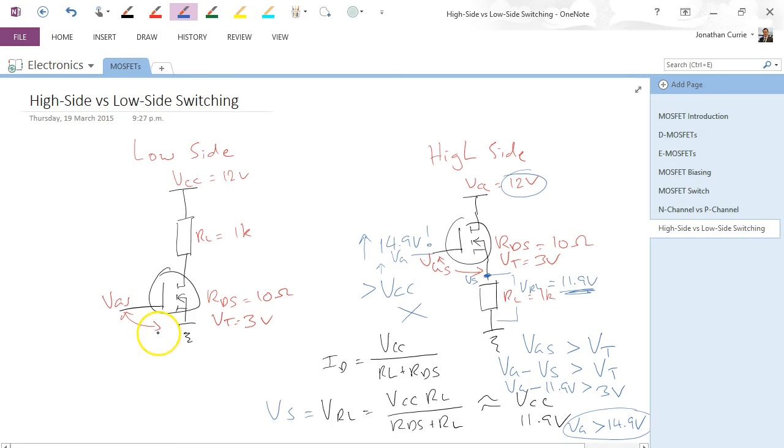Especially when if we were just to use the same FET with the same components and the same power supply in the low-side configuration, and we did the same calculation again, we would see that Vs is equal to 0 volts, because it's connected to ground. Therefore, Vg minus Vs to be greater than 3 volts, Vg only has to be 3 volts.